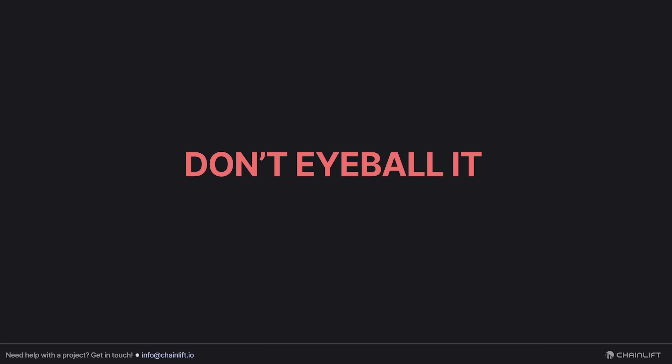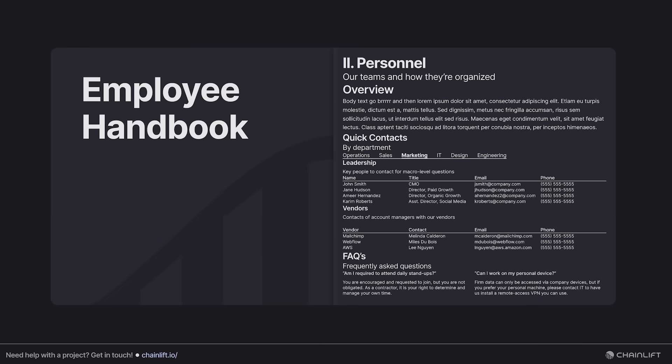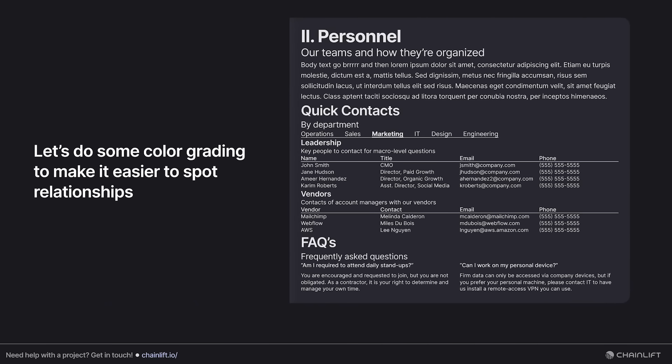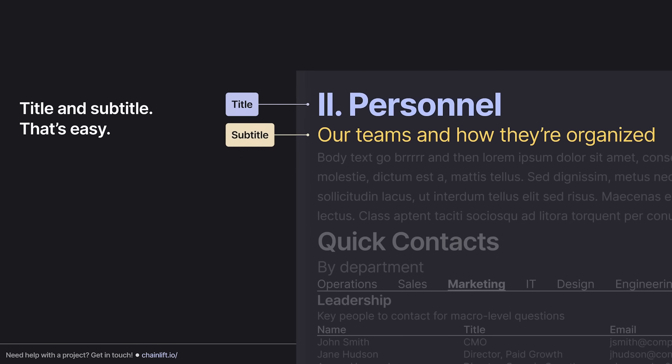How much space to use — do we just eyeball it? No. Instead, we use preset spacing values from a scaling system. For this demonstration we're using the Lift Kit system. We're designing an employee handbook and need to break up the spacing to make it easier to read. The first thing we'll do is apply some color grading to make it easier to spot different levels in the type hierarchy. Then we look for relations and group elements into pairs.